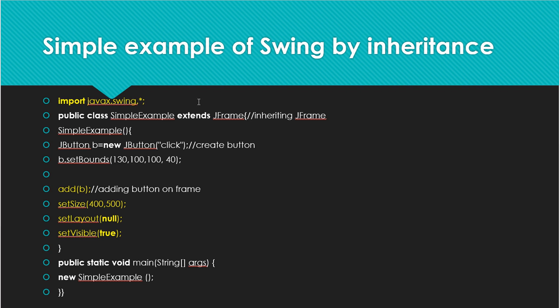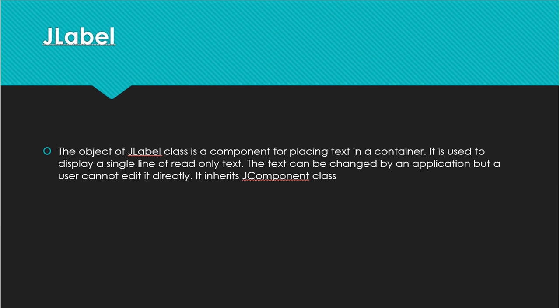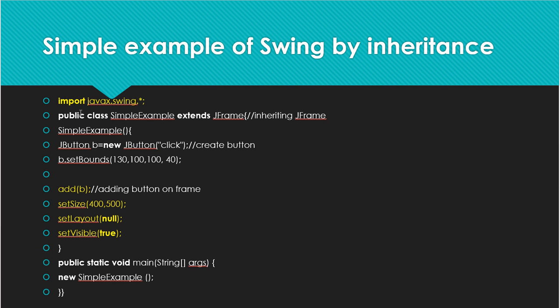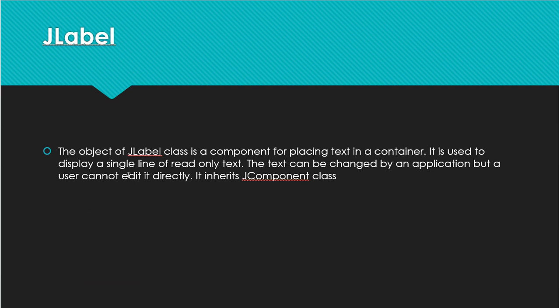Without further ado, let's discuss JLabel. A label means it is a label in the form of text that we can see on the display — in the output window you can see the label, it is a kind of string. In the swing package, we import javax.swing.*. JLabel is there. The object of JLabel class is a component for placing text in a container.